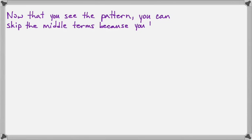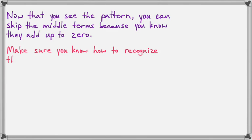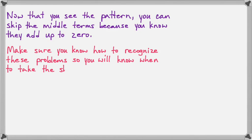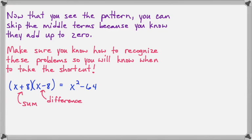So on these next few examples, I want us to not write the two middle terms, but take advantage of skipping the outer plus inner because it adds up to zero. Now you need to make sure you know how to recognize these problems because I've seen a lot of students try to take this shortcut on problems that it didn't apply to, and so I think knowing the shortcut is just as important as knowing when to take the shortcut.